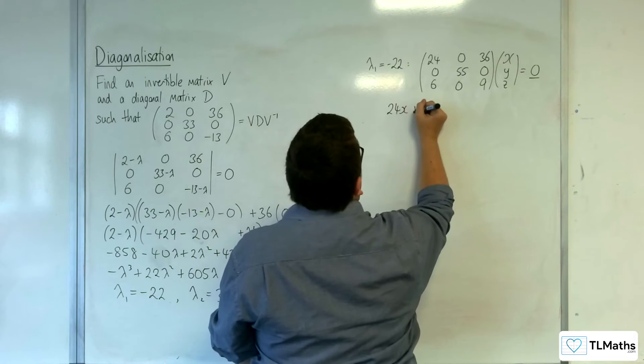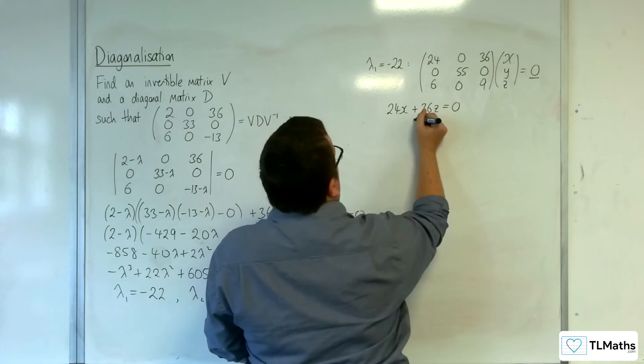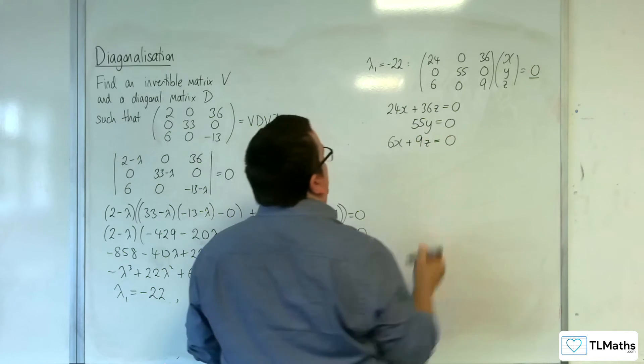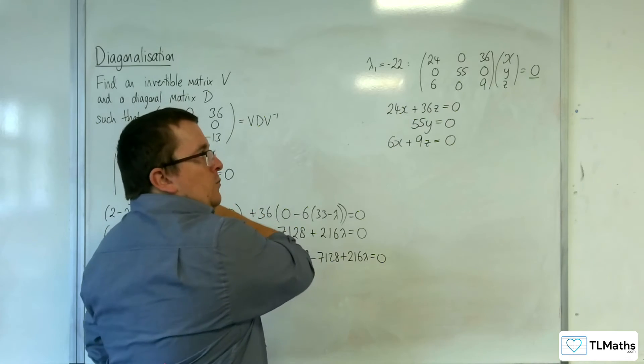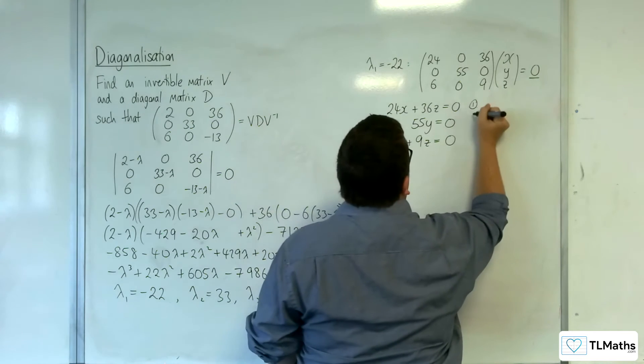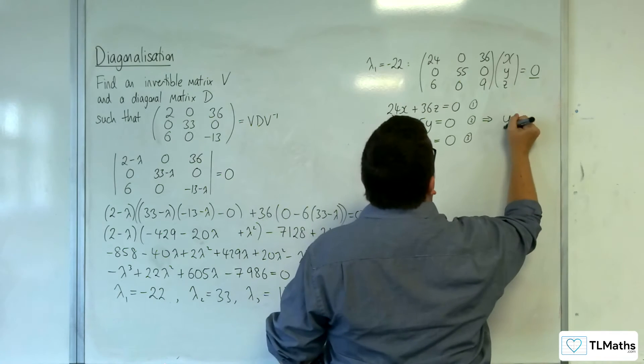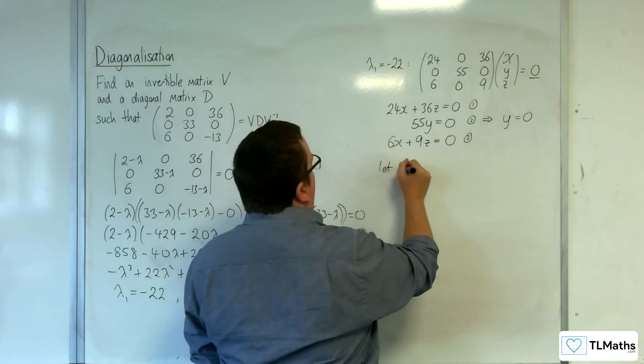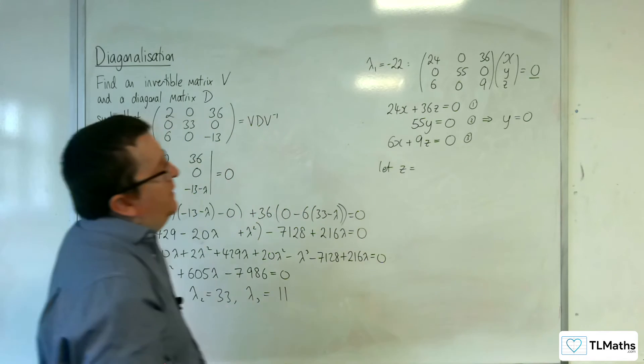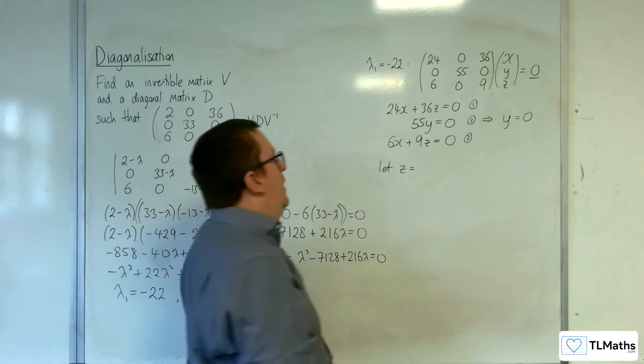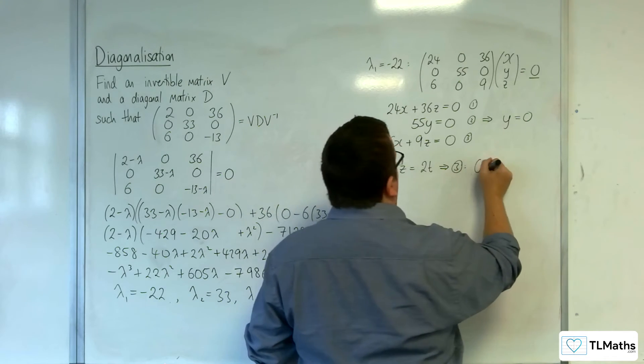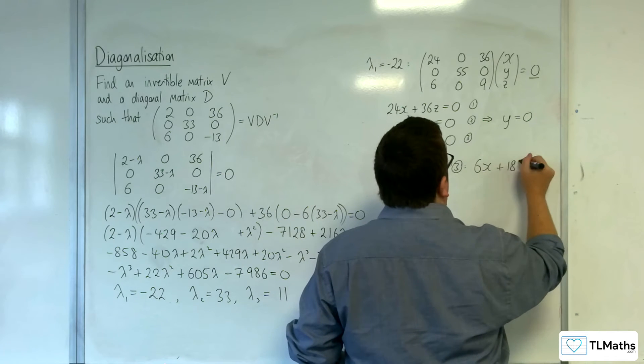So we've got 24x plus 36z is 0. We've got that 55y has got to be 0, and 6x plus 9z has got to be 0. These two equations are corresponding here, they're the same thing. From equation 2, that means that y has got to be 0. So if we let z be equal to 2t, then equation 3 will become 6x plus 9 lots of 2t, so 18t equals 0.